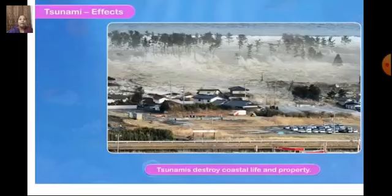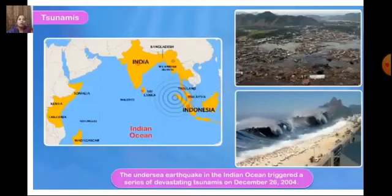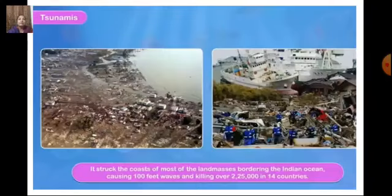The undersea earthquake in the Indian Ocean triggered a series of devastating tsunamis on December 26, 2004. Around 1,70,000 people died in India. It struck the coasts of most land masses bordering the Indian Ocean, causing 100-foot waves and killing over 2,25,000 people in 14 countries.